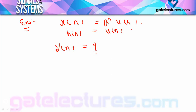So in this question we need to calculate Yn. Both Xn and Hn values are given. In the last video the Xn and Hn values we saw were constant, finite values — like 1, 2, 3, 4, 5 or 2, 3, 4, 5 — such values were given. Now here if you look, Xn and Hn are given as equations, so for many values of N you can create samples here.